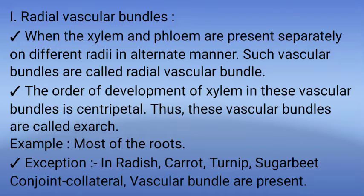Example: Radial Vascular Bundles are mostly seen in Roots. Exception: In the roots of Radish, Carrot, Turnip, and Sugar Beet, Conjoint Collateral Vascular Bundles are found instead. Let's see the diagrammatic representation of Radial Vascular Bundles in roots, showing how xylem and phloem are arranged on different radii.